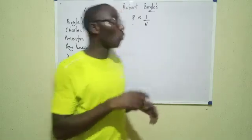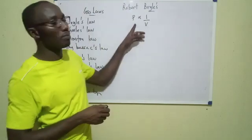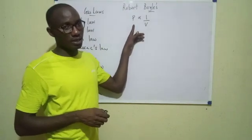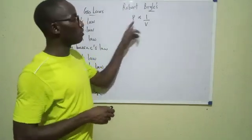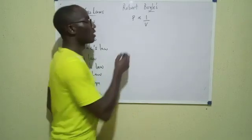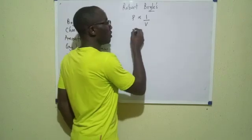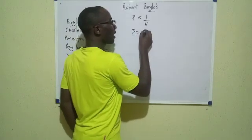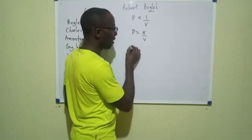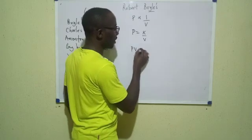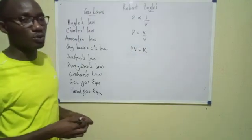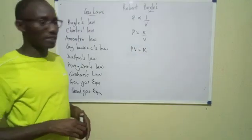From this expression, if we introduce a constant, we have P equals K over V. If you cross-multiply, you get PV equals K. So we say PV equals constant.